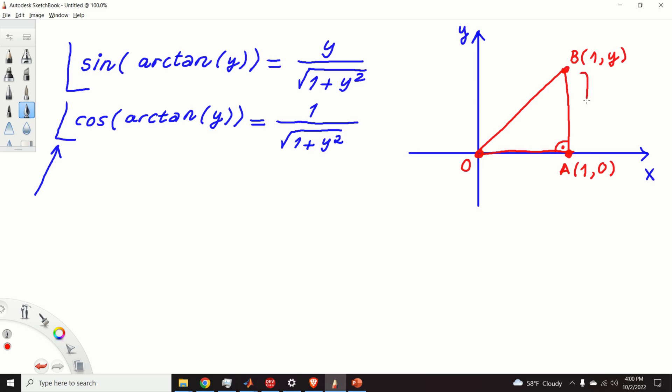So, this distance from A to B is basically y. And let us denote the angle over here by alpha. Now, let's go back to our original expression. We are trying to find what is sin(arctan(y)).